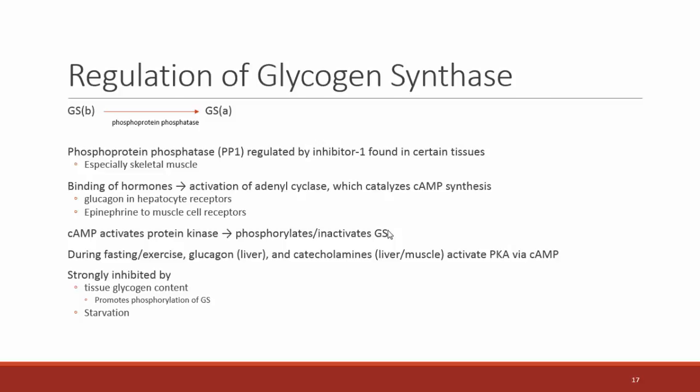When fasting or exercising, glucagon or catecholamines activate protein kinase A via the cAMP second messenger system, phosphorylating glycogen synthase so we don't build glycogen. Glycogen synthase activity is also strongly inhibited by high tissue glycogen content — if we've got tons of glycogen, we don't need to build more. It's also inhibited by starvation, which also makes sense since we wouldn't have much glucose to store.